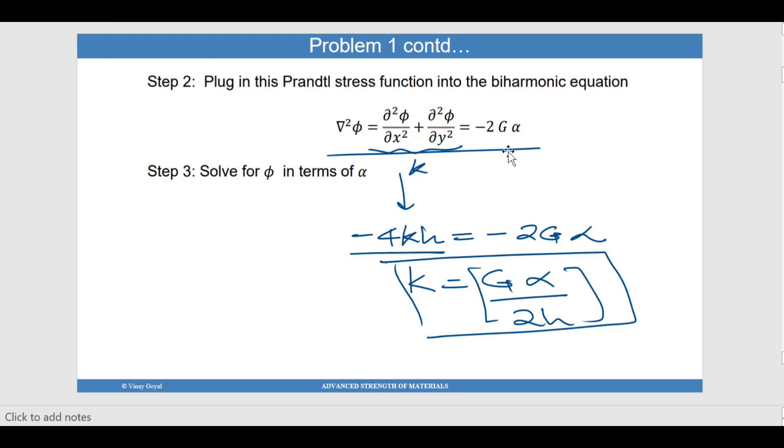So now you have K, right? So now you know the entire Prandtl function in the exact form in terms of G alpha. You know what G is, alpha is the twist per unit length. You have to find out what alpha is, but you know what it means. K was just like a constant out there. So now that you have solved step two and step three, you know what the value of K, so you move on to the next step.